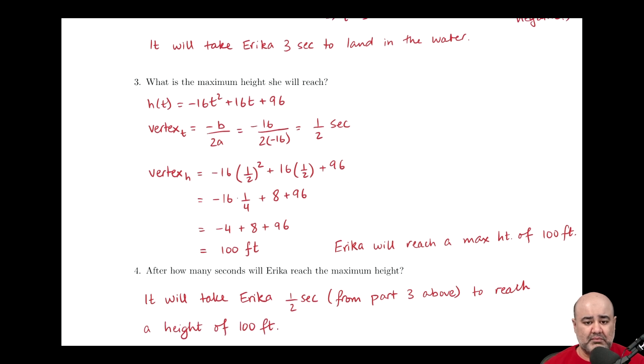Next, we're looking for the maximum height that she will reach. This is the y-coordinate of the vertex, or the h value in this case. Now, if we're given a function, in order to find the y-coordinate, we first have to find the x-coordinate of the vertex, or in this case, the t-coordinate, because that's the input. So in order to find the t-coordinate of the vertex, we use our friendly formula, negative b over 2a. So negative of b would be negative 16, over 2 times a. a is negative 16, so we place that here. Negative 16 over negative 16 cancels out, leaving us with one-half second.